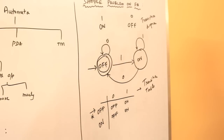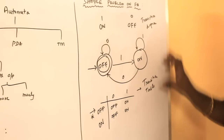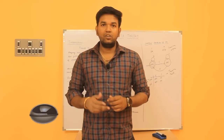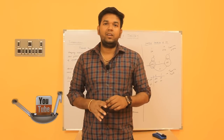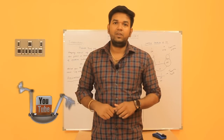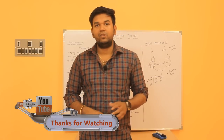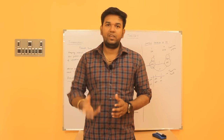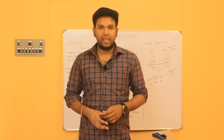So for a given problem, we need to make a transition diagram and then a transition table. As a conclusion, we covered the basics about Automata. In the next class, we will discuss Deterministic Finite Automata (DFA) — its definition and a few solved problems. Thank you.